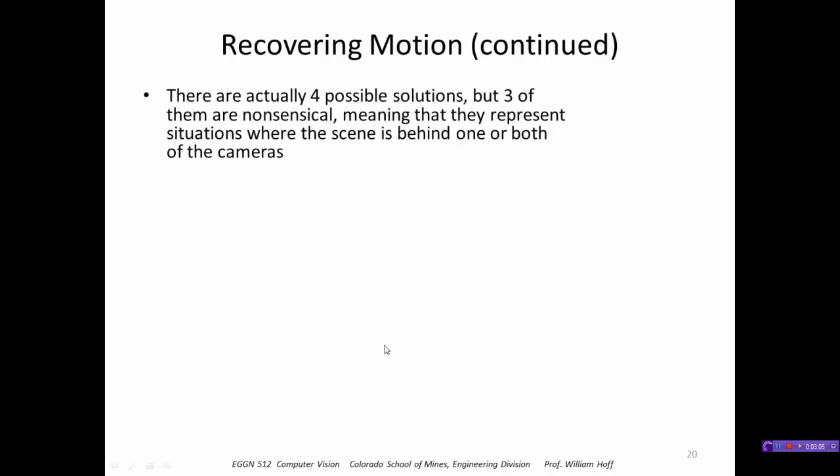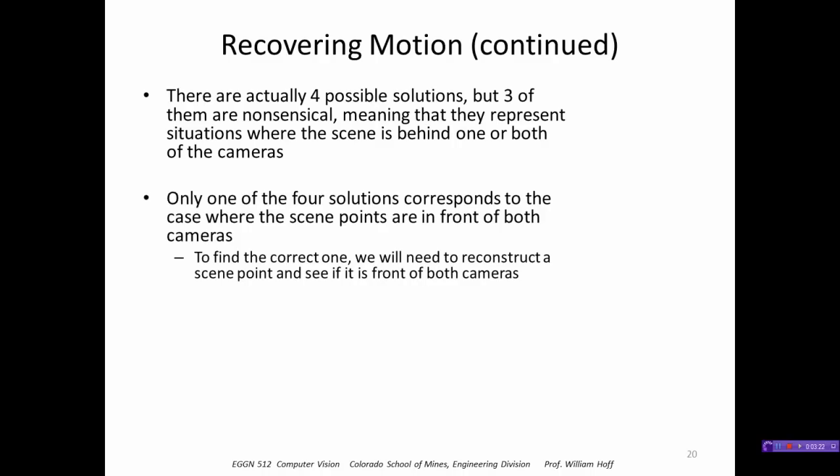So we actually have four possible solutions for translation and rotation, two for translation, two for rotation. But three of these are nonsensical, meaning that they represent situations where the points are behind one or both of the cameras. So we want the only solution that corresponds to the case where the points are in front of the cameras. To find that we construct a scene point, we can reconstruct the scene point via triangulation and see if it is in front of both cameras. If it is, then that combination of translation and rotation is correct.